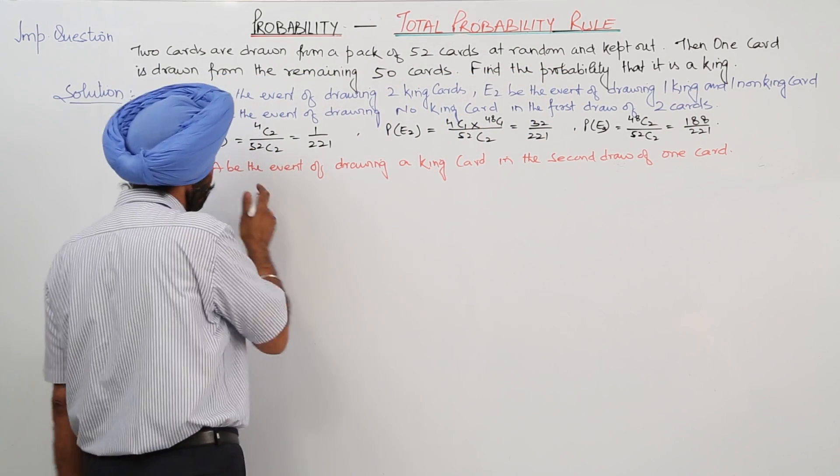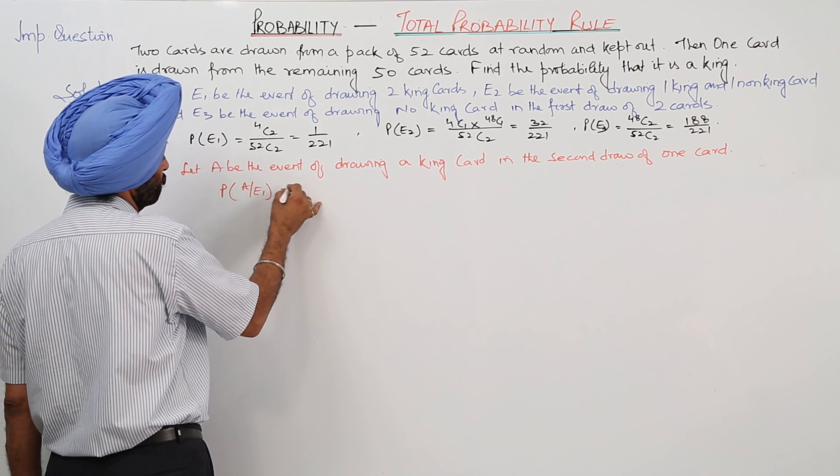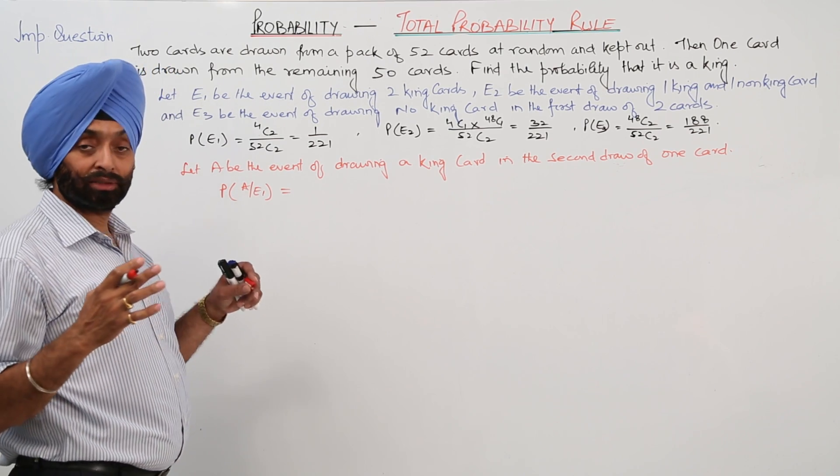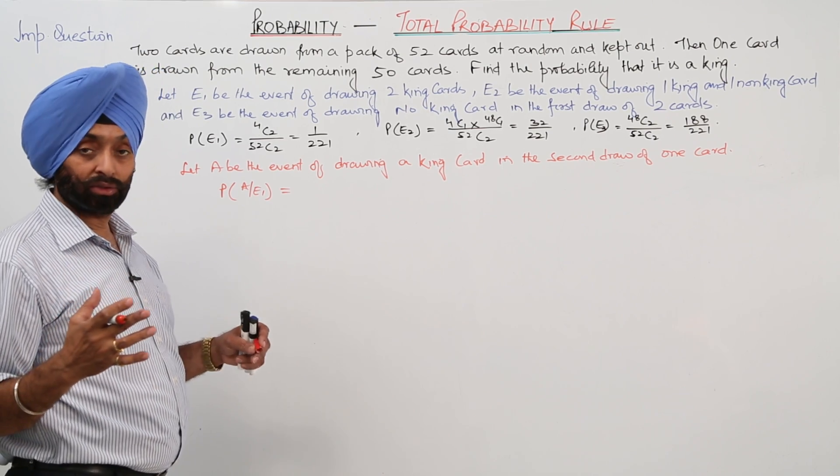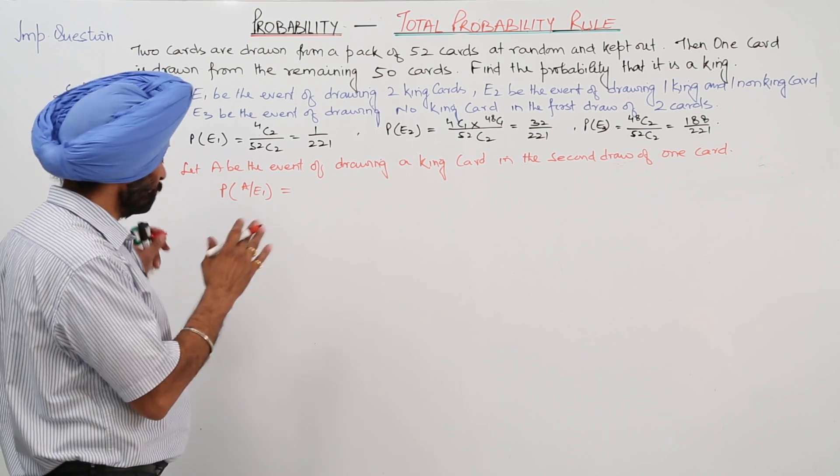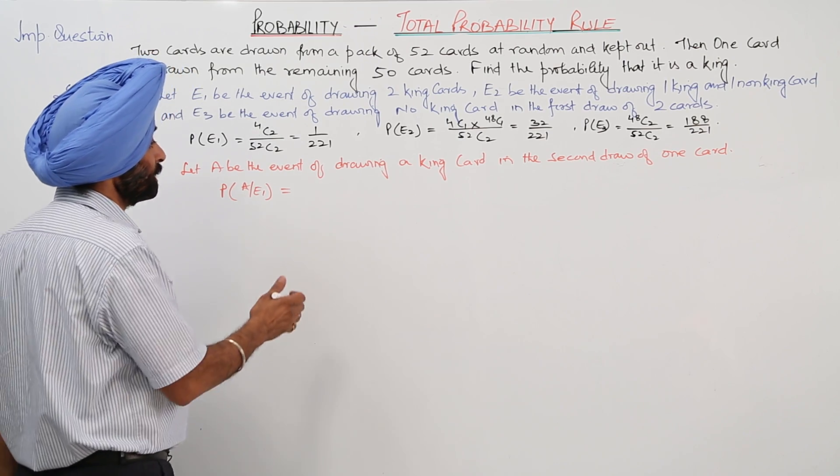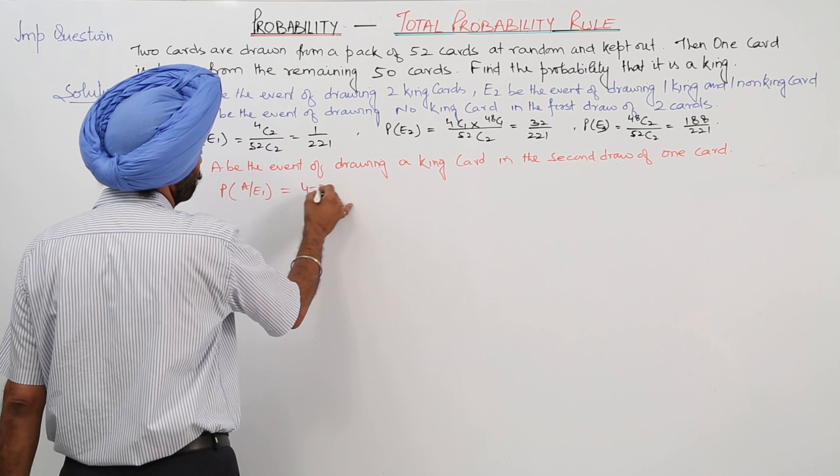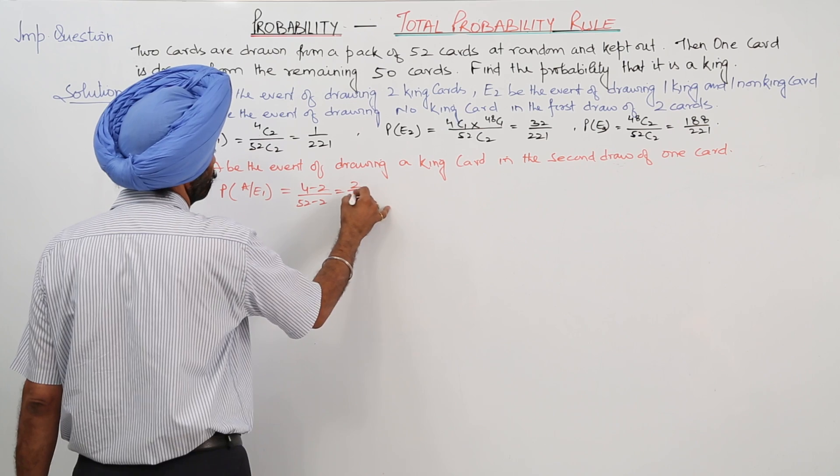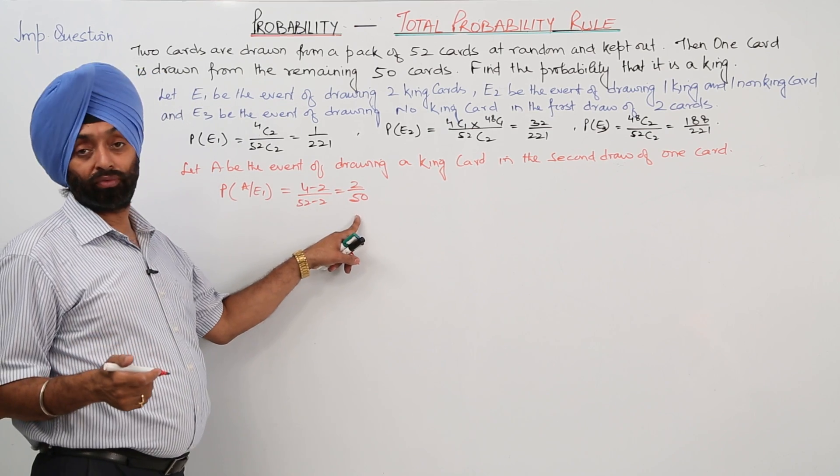Now be careful what I am writing. Probability for A oblique E1. Now 2 cards that have been drawn and that were king cards. Now 3rd card also should be a king card. So that is left, 2 cards are left 1 side. Now it is for the next event. A oblique E1 will be now 4 minus 2 upon 52 minus 2, that is 2 upon 50. 2 cards are already kings, 2 king cards are left. From how many? From 50.